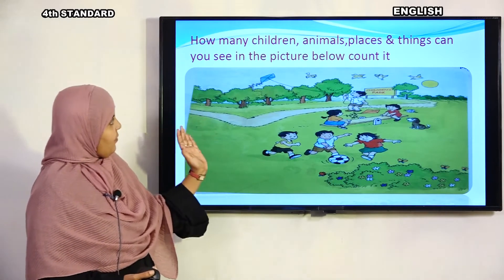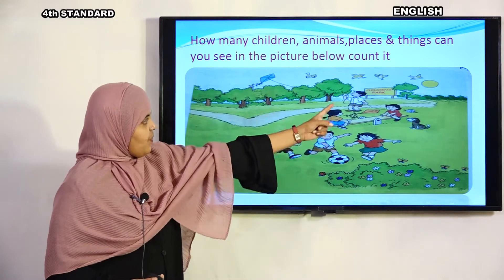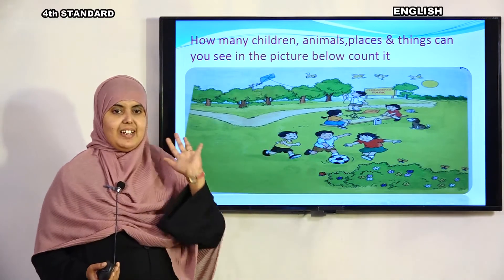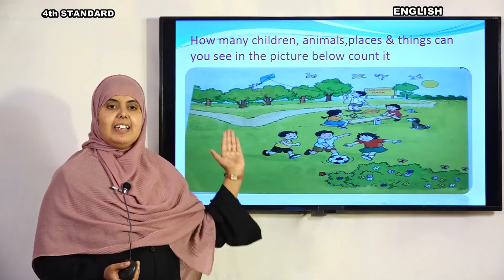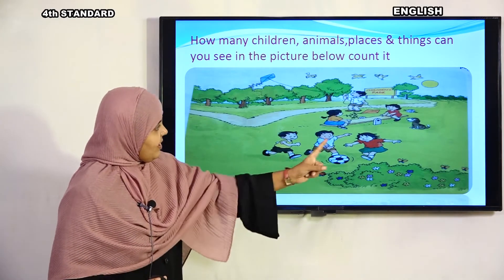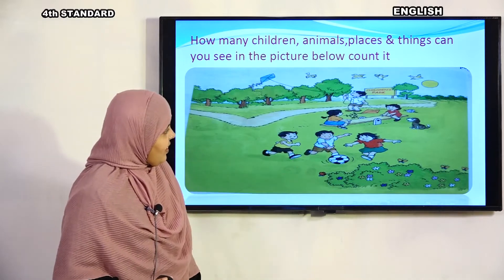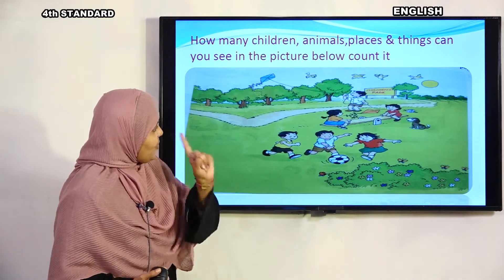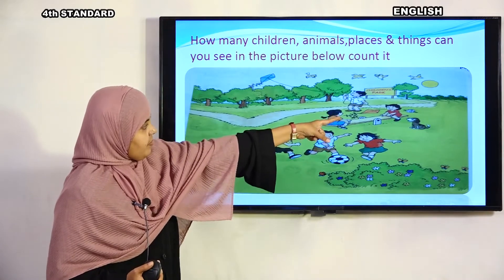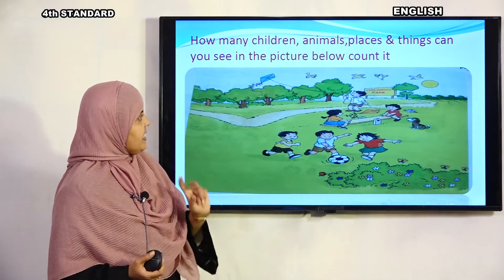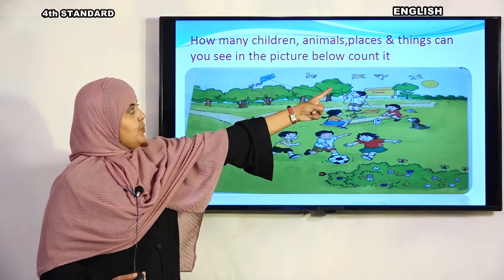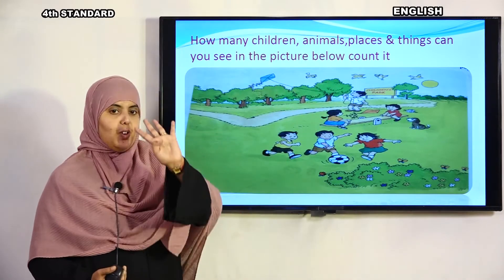First, children. How many children are there here? 1, 2, 3, 4, 5, 6. Six children are here in this picture. Next, animal. Dog is there — dog, one animal. Then things: ball, one. Kites: 1, 2 — kites are 2. How many birds are there? 1, 2, 3, 4 — four birds.